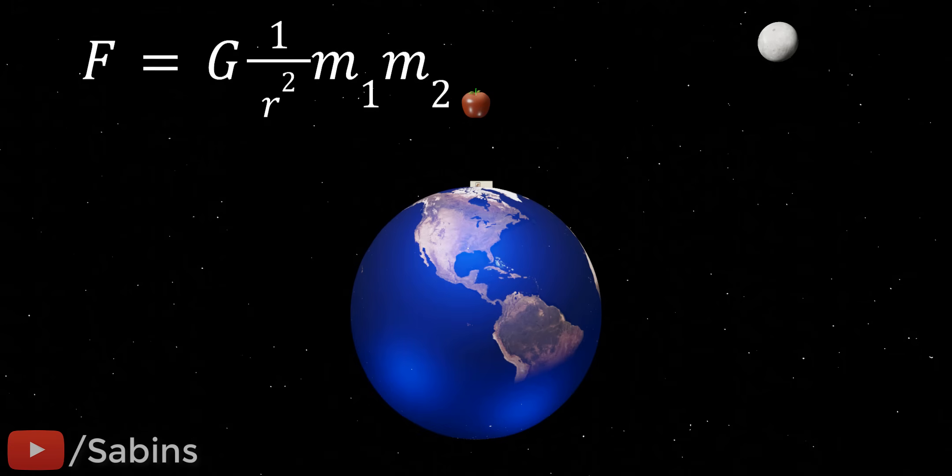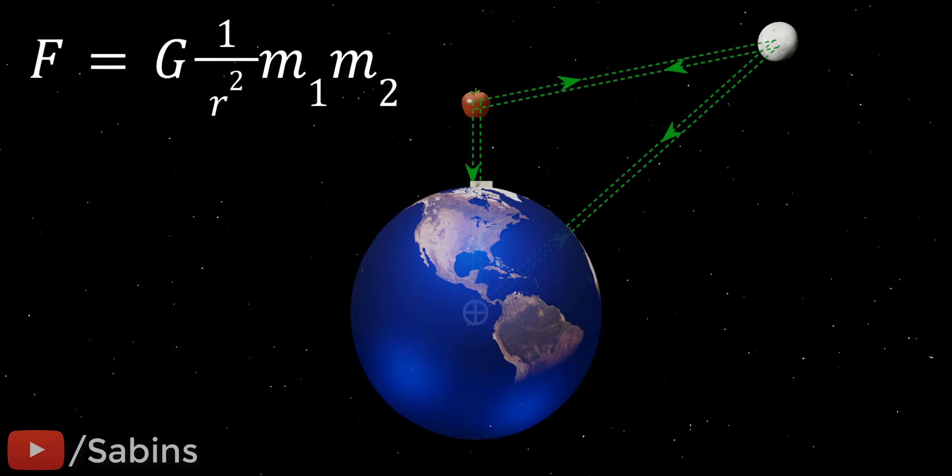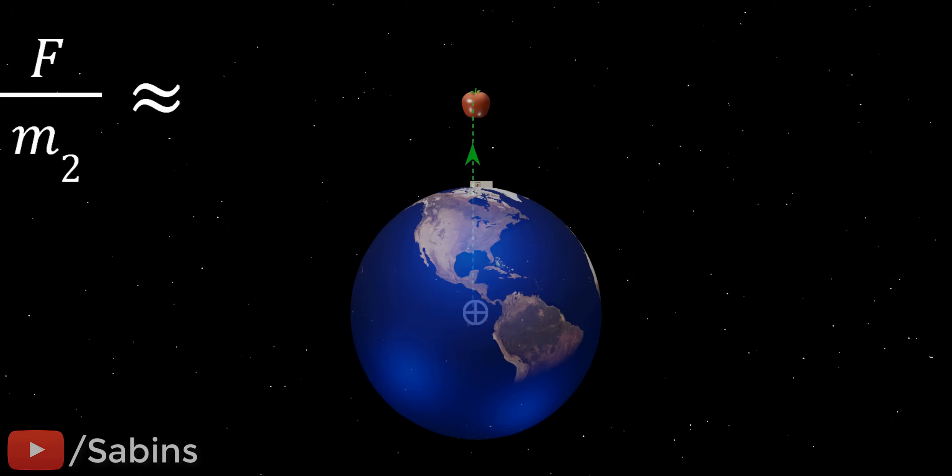According to the universal law of gravitation, all the objects in this universe attract each other. In this case, the Earth attracts the apple with a force value defined by this equation. The apple also attracts the Earth with the same force value. However, the Earth doesn't move to the apple because when you divide this force by the mass of the Earth, the acceleration value becomes negligible. The case is the same with every other object in the universe.